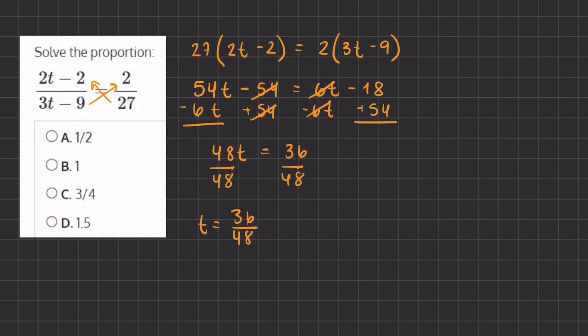Now we want to simplify this fraction. We know that 36 and 48 are both divisible by 4, so we can divide by 4. When we do this, we have 36 divided by 4 which gives us 9, and 48 divided by 4 which is 12.